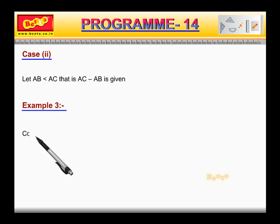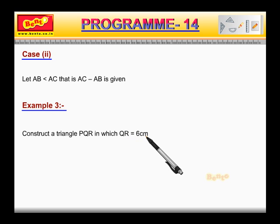Example 3. Construct a triangle PQR in which QR is equal to 6 cm, angle Q is equal to 60 degrees, and PR minus PQ is equal to 2 cm. Construction.